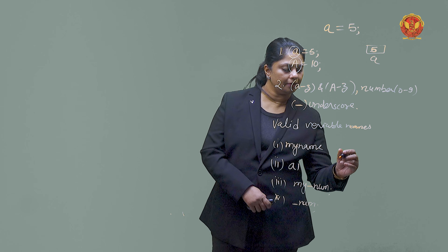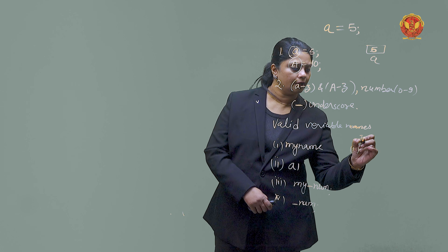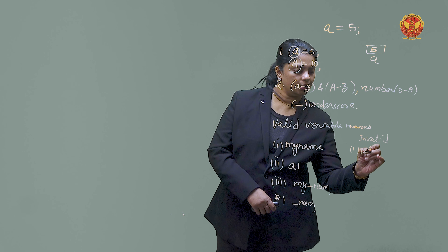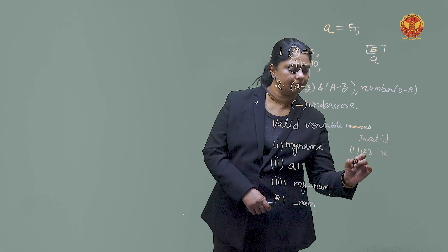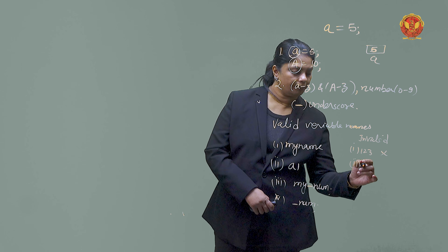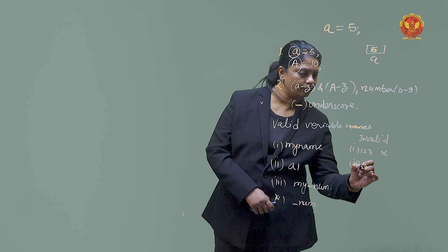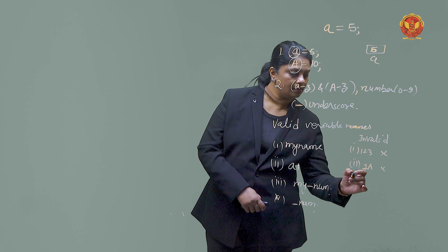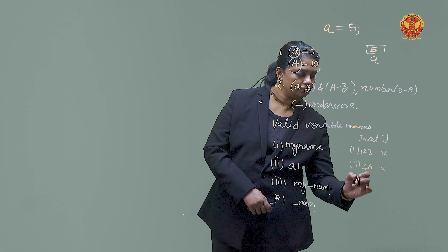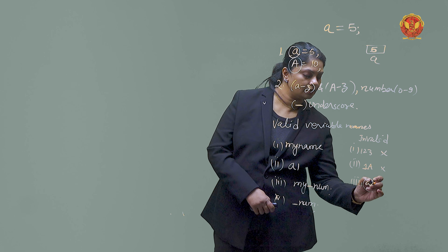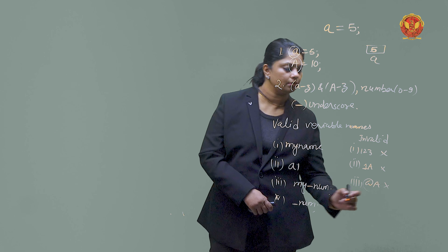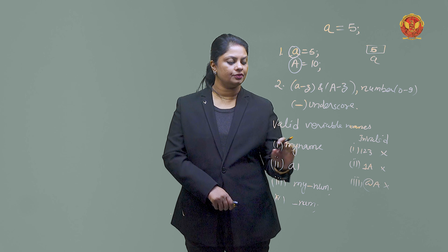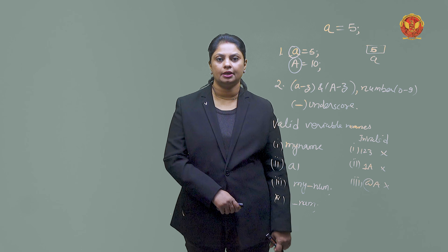Now let's talk about invalid variable names. Names like 1, 2, 3 or starting with a number like 18 are not valid. Also, starting with just a number like 1a is not valid. So these are invalid variable names, and the earlier ones were valid variable names.